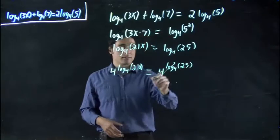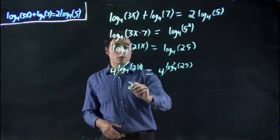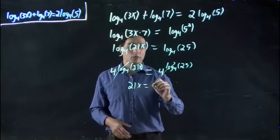And remember, these cancel. So all we're left with is 21x equals 25.